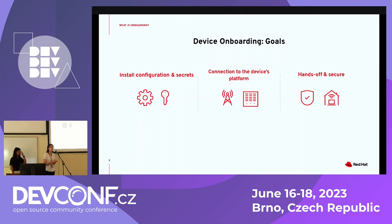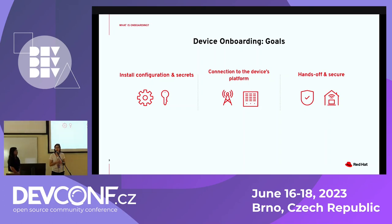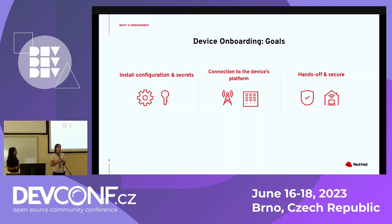So what is device onboarding? Why do we care? Device onboarding happens after we make an image, provision it, and then we have to give the devices all the configurations and secrets they need in order to perform their final function. During this onboarding process, we also hope to get a connection from the device to the final IoT platform. The platform is what the device needs in order to get updates and other software. This whole process needs to be secure at each step, and there shouldn't be a need for human intervention.